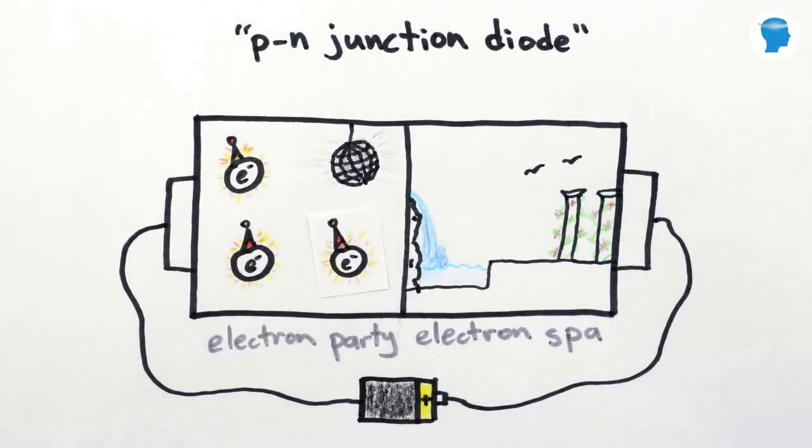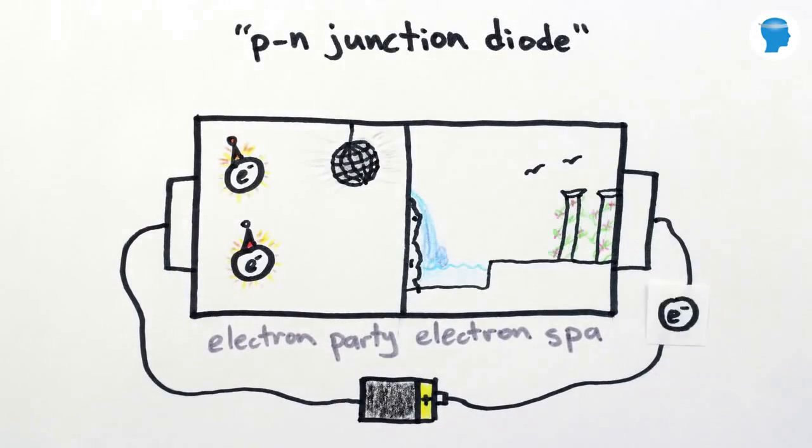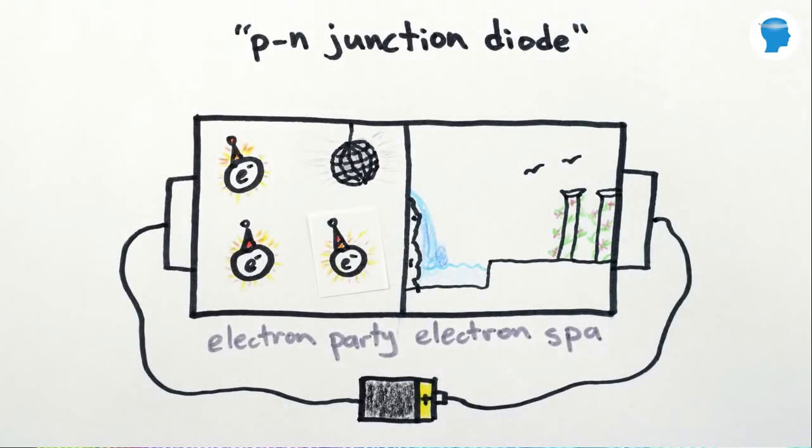All you need is an electrical current to transport electrons from the party side, to the spa side, where they release the energy of their excitement as light. Voila, a light-emitting diode, perfect for human parties.